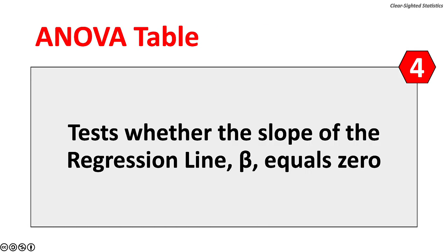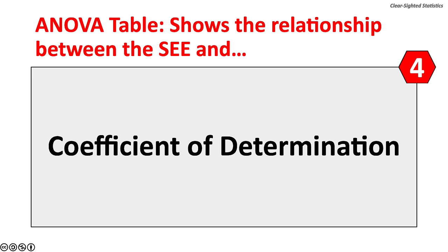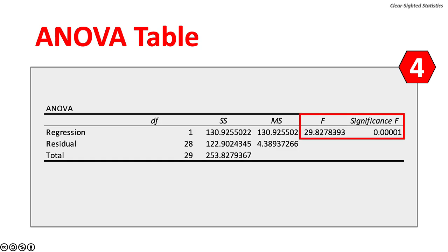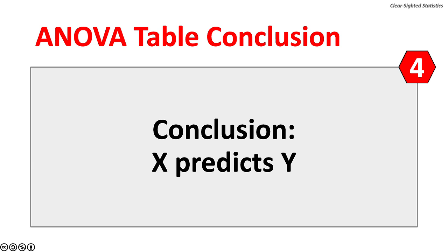Excel includes an ANOVA table testing whether the slope of the regression line, beta, equals zero. The null hypothesis is beta equals zero — X does not predict Y. The alternate hypothesis is beta does not equal zero — X predicts Y. The F statistic is extremely high at 29.828, and the p-value (significance F) is very low, less than 0.001. Conclusion: reject the null hypothesis — the slope of the regression line in the population is not zero, and the independent variable predicts the dependent variable.